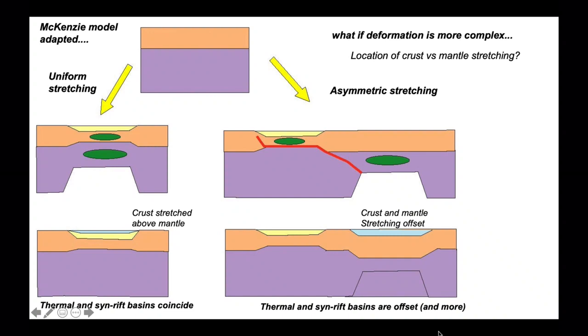In this alternative, more complicated situation, the thermal and syn-rift basins are offset. You can create a whole series of these more complicated scenarios, but they still have this two-stage process of active stretching followed by thermal subsidence.